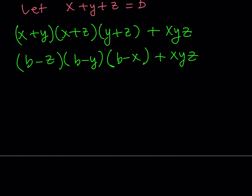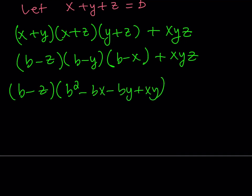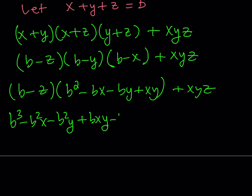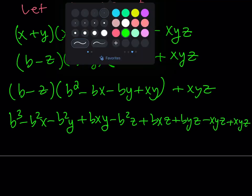One thing we can do is distribute this and see what happens. Keeping (b − z) alone, let's distribute to get b² − bx − by + xy, and then we have the xyz. Distributing everything gives b³ − b²x − b²y + bxy + b²z + bxz + byz − xyz, and at the end we add xyz. Notice that xyz and −xyz cancel out.